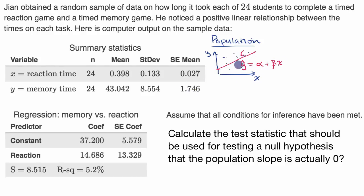Now we don't know what this truth of the universe is, of the linear relationship between reaction time and memory time, but we can try to estimate it, and that's what Jian is trying to do. So he's taking a sample of 24 data points.